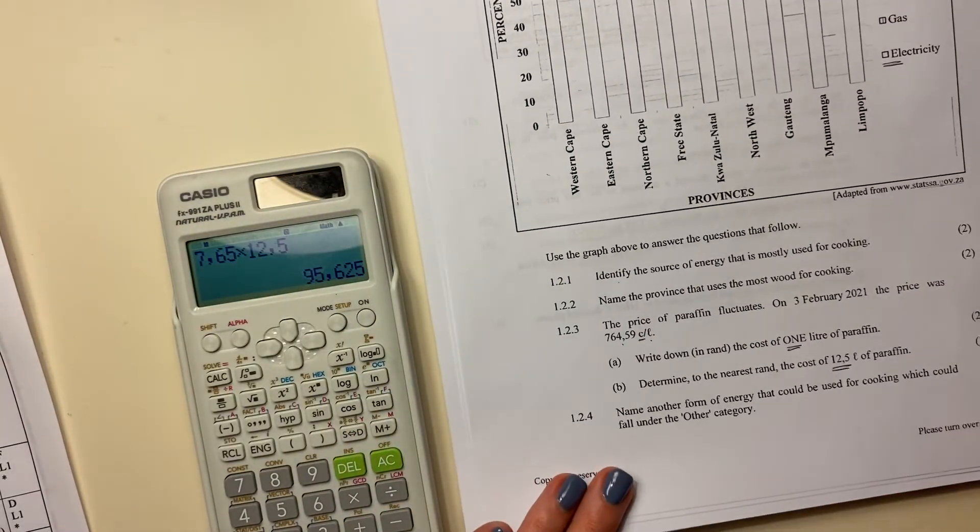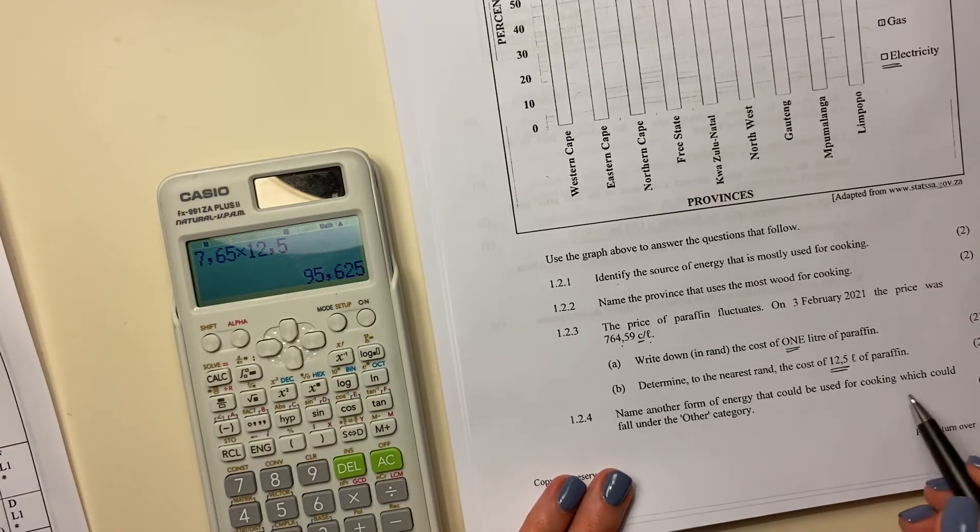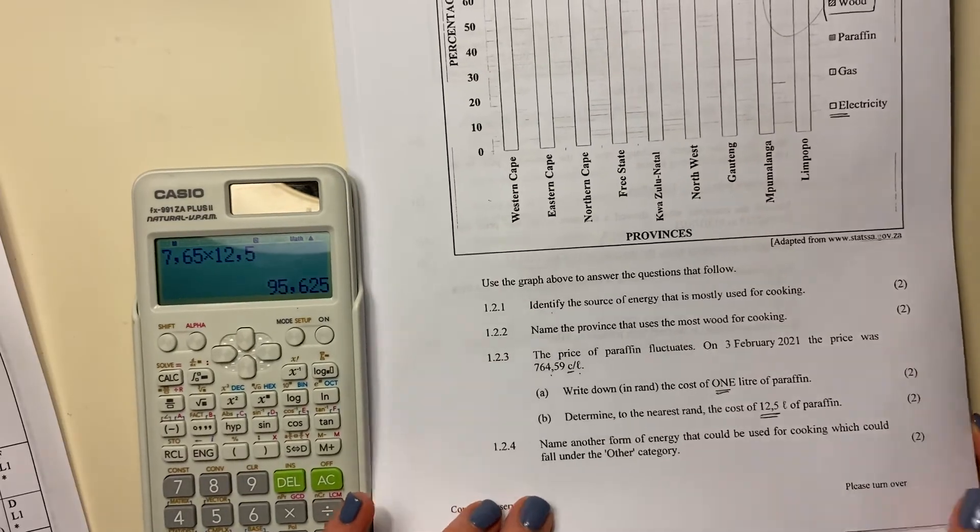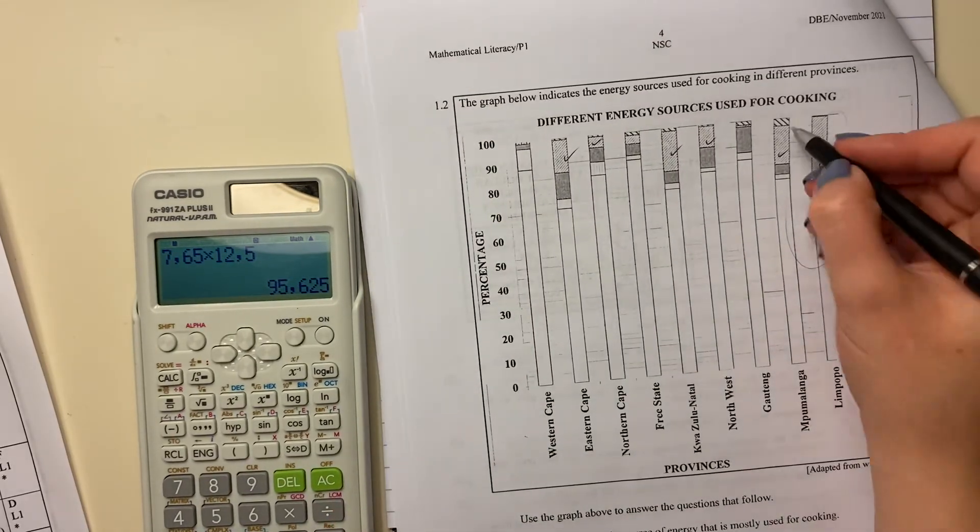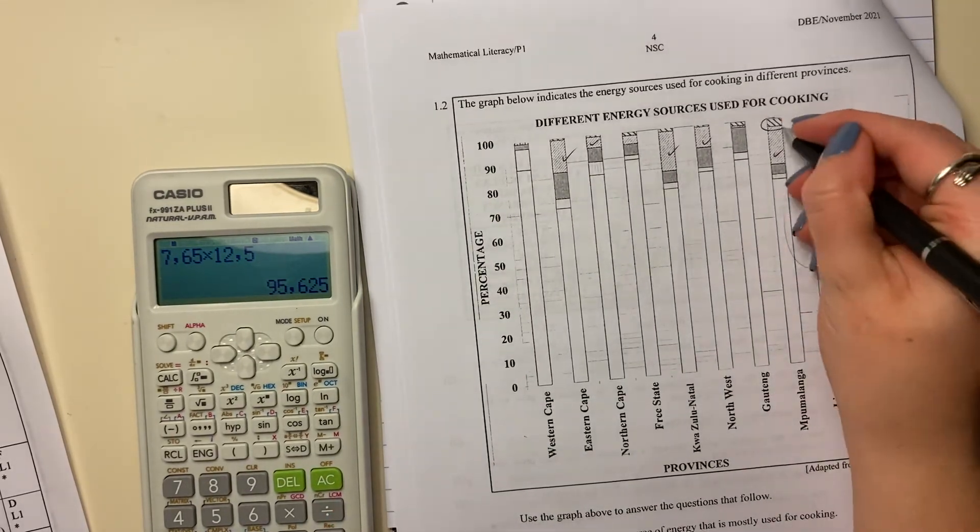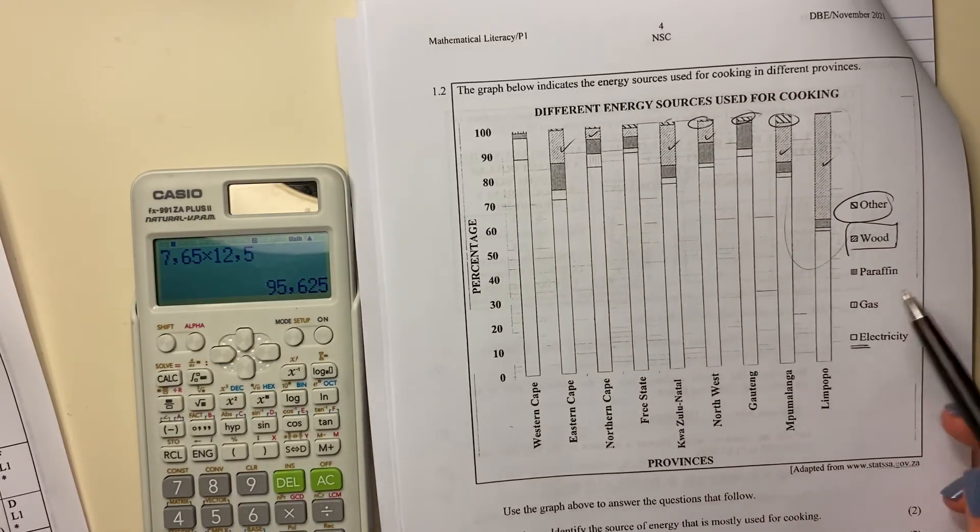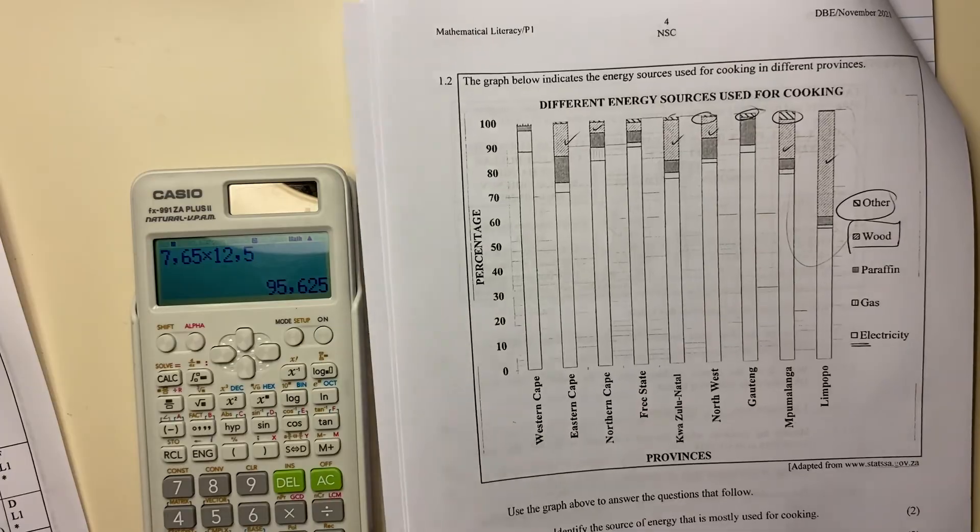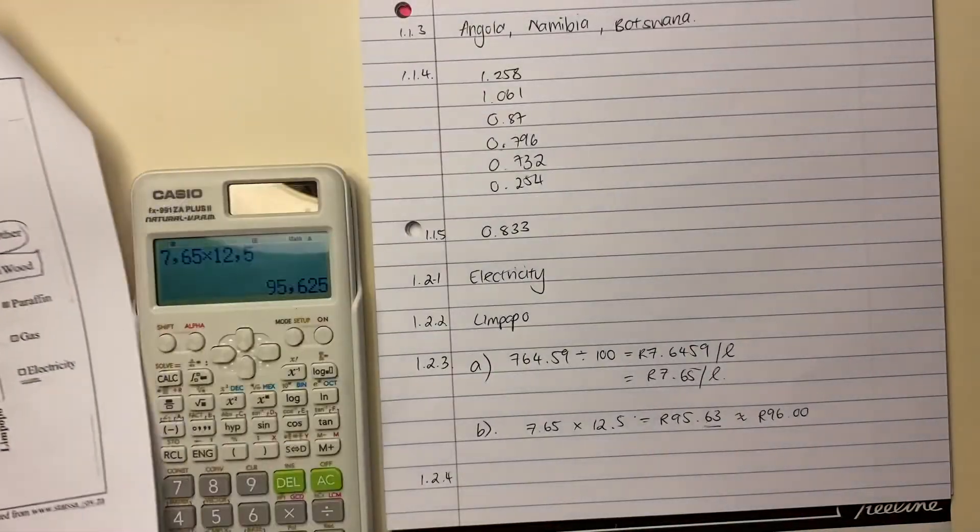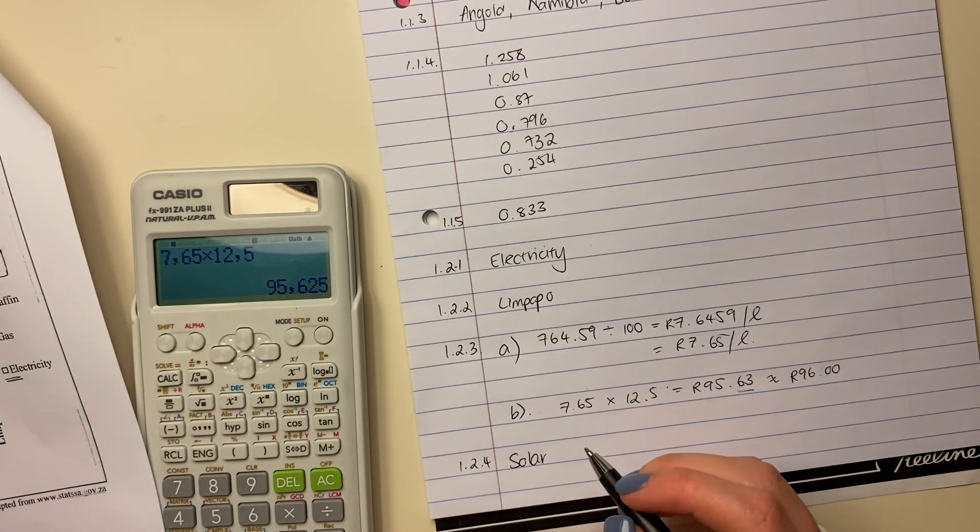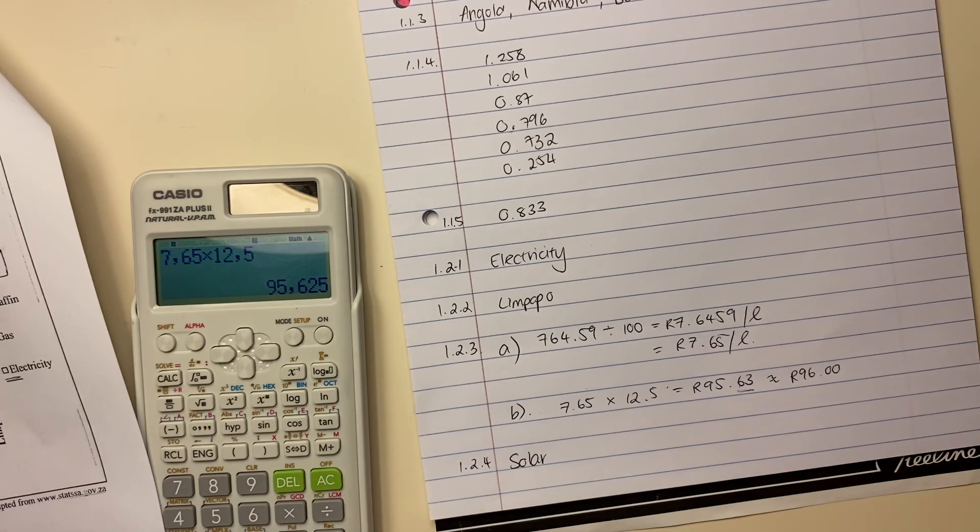Then it says, name another form of energy that could be used for cooking, which could fall under the other category. Okay, so the other category is this kind of other stripes at the top there. So you're basically saying something that's not electricity, gas, paraffin, wood. So you could say, for example, solar. That's probably a good one. That's probably quite a likely one. You could say solar. You could also say like hydropower, but in South Africa, solar is more common. Okay, so that question is done.